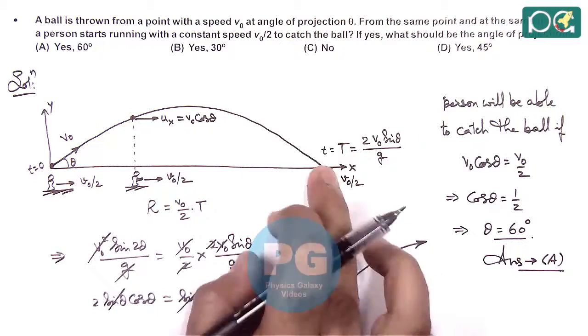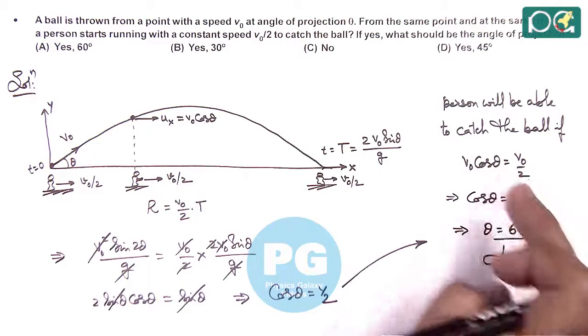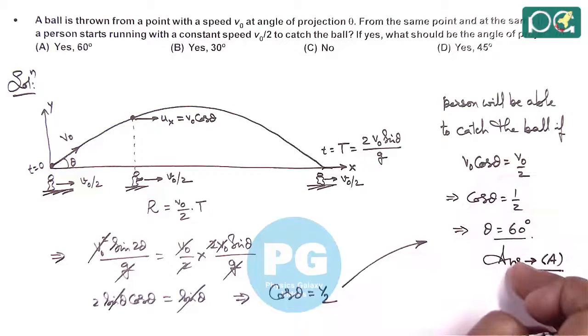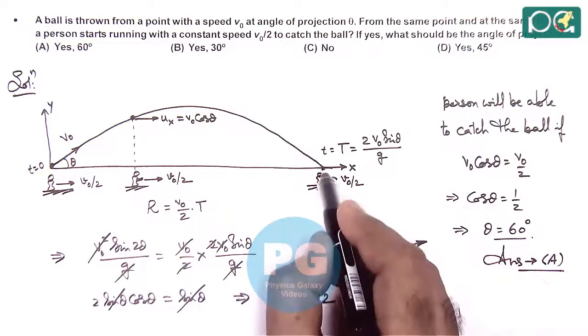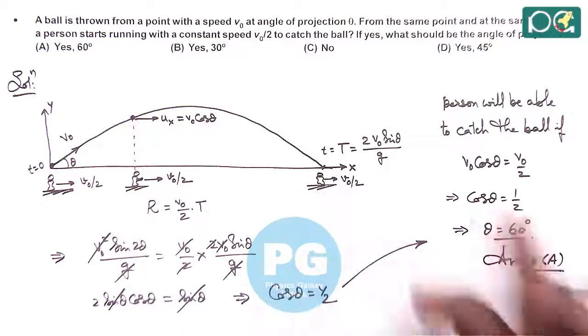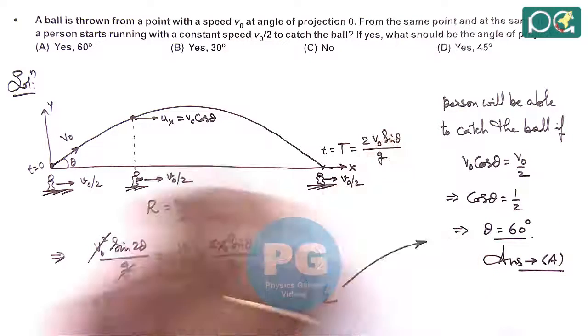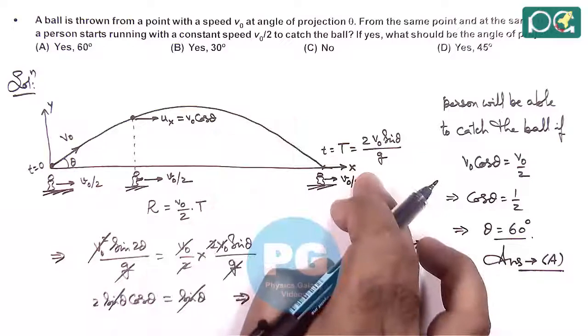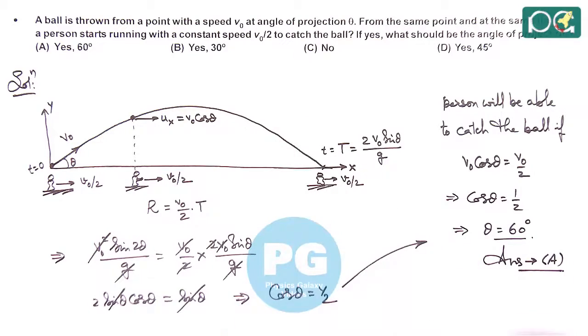So directly you can solve it. But if it does not strike in examination, you can also solve it mathematically because a question can be handled and approached in different ways. So the distance travelled by man in time of flight has to equal the horizontal range of ball. Both are giving us the same result.